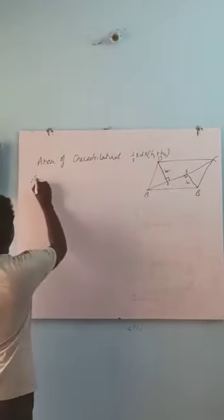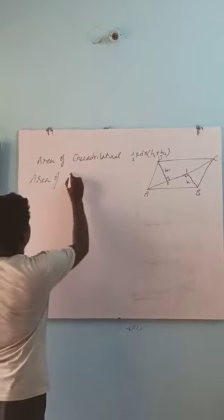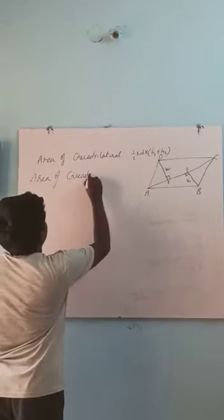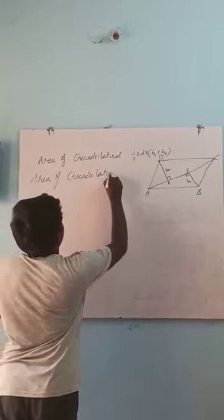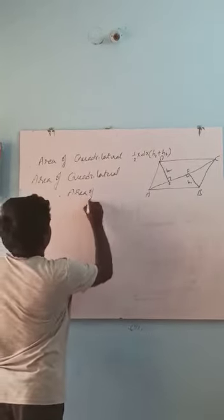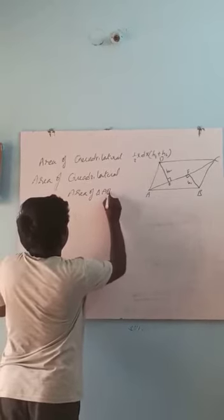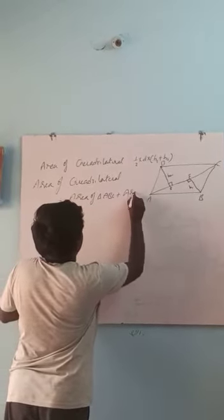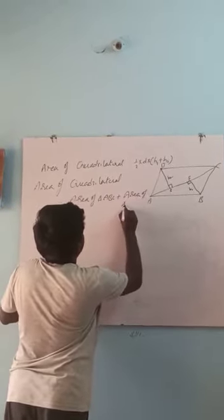Here, area of quadrilateral equals the sum of area of triangle ABC plus area of triangle ADC.